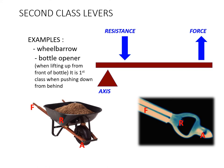For the wheelbarrow, the force is applied at the handles, the resistance is the weight or load in the tray in the middle, and the axis is the wheel — so resistance is in the middle, making it a second class lever. For the bottle opener shown, the axis is the top point, the resistance is where the cap sits in the socket, and the force is your hand at the end. Depending on how you use a bottle opener, you can manipulate the axis and resistance positions.